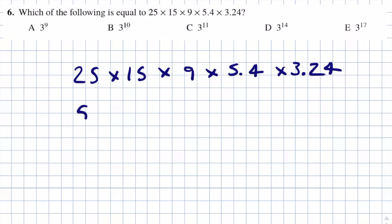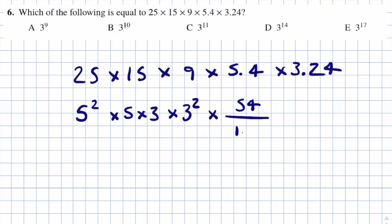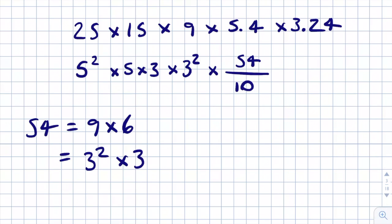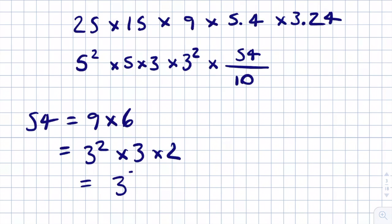Instead of 25 I'll write 5 squared. For 15 I'll write 5 times 3, which is 3 to the power 1. Then 9 is 3 squared. For 5.4, I'll think of it as 54 over 10. Since 54 is 9 times 6, that's 3 squared times 3 times 2, which is 3 cubed times 2. So I'll replace 54 with 3 cubed times 2.